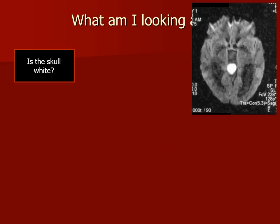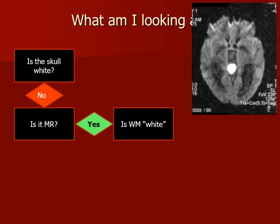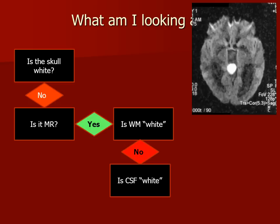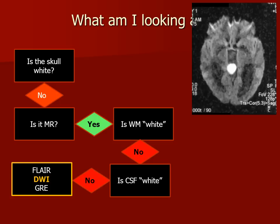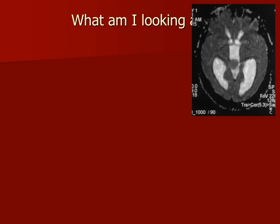Here's another image from the same patient. The skull is not white — it is an MR. The white matter is not whiter than the gray matter. The CSF is actually dark on this pulse sequence. So this is actually a diffusion weighted image, and the free diffusion of water in the ventricles and sulci is suppressed.